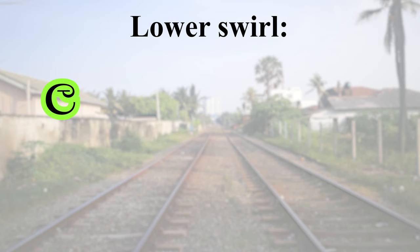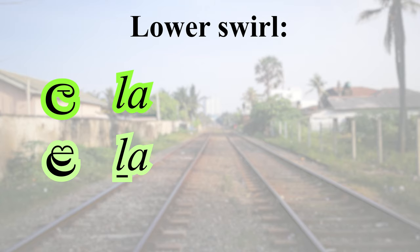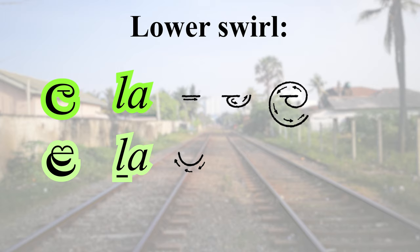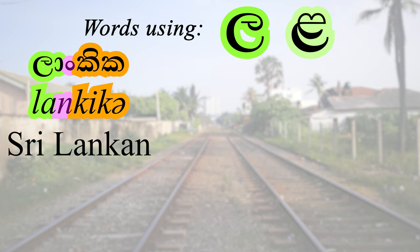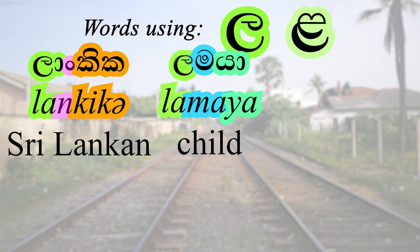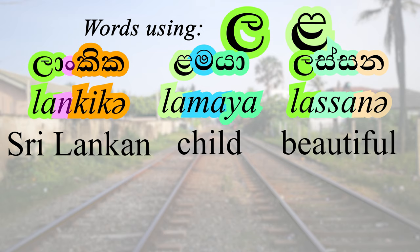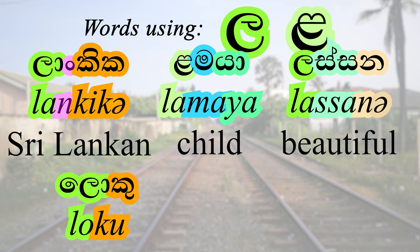Another example of N is 'Lanka'. This letter is L, and any other lower swirl also represents the sound L. The first L starts with a minus sign followed by a counterclockwise swirl. The second L starts with an inner clockwise semicircle, curves over and comes down parallel to the first curve. In ancient Sinhala these two letters used to be pronounced differently, but in modern Sinhala there is no distinction — yet the spelling is kept for cultural and historic reasons. 'Lanka' is the correct spelling for Lanka. 'Lankiku' means Sri Lankan. Even 'Lamaya', meaning child, may be seen spelt with either L. 'Lassun' means beautiful — notice the double consonant. 'Loku' means big.